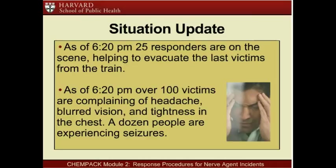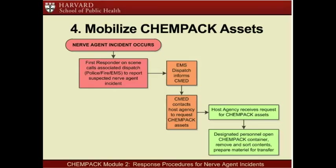As of 6:20 p.m., 25 responders are on the scene, helping to evacuate the last victims from the train. Over 100 victims are complaining of headache, blurred vision, and tightness in the chest. A dozen people are experiencing seizures. While responders on the scene are initiating incident response, the nearby host facility is in the process of mobilizing ChemPAC assets. Upon receiving the request for ChemPAC assets from the regional CMED, designated personnel at the facility open the ChemPAC container, remove and sort the contents, and prepare the antidotes for transfer to the incident scene and to the nearby non-host hospital.